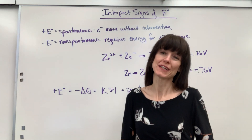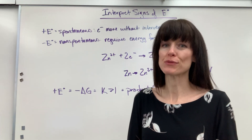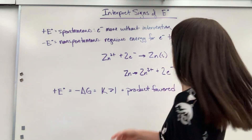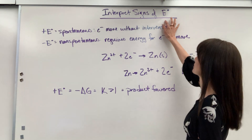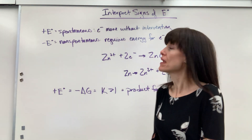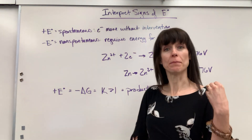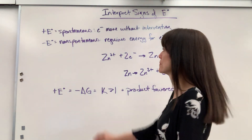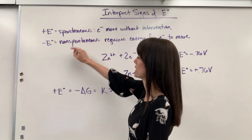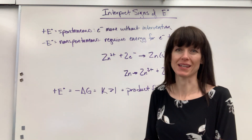I'd like to review the signs on the standard reduction potential. Remember, our symbol for that is E naught. When you have a positive E, that means it's spontaneous, and a negative E means it's non-spontaneous.